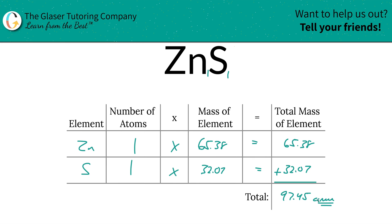The units are AMU — atomic mass units — because we're dealing with molecular mass. Now you know how to find the molecular mass of zinc sulfide. Who's happier than you? See you soon.